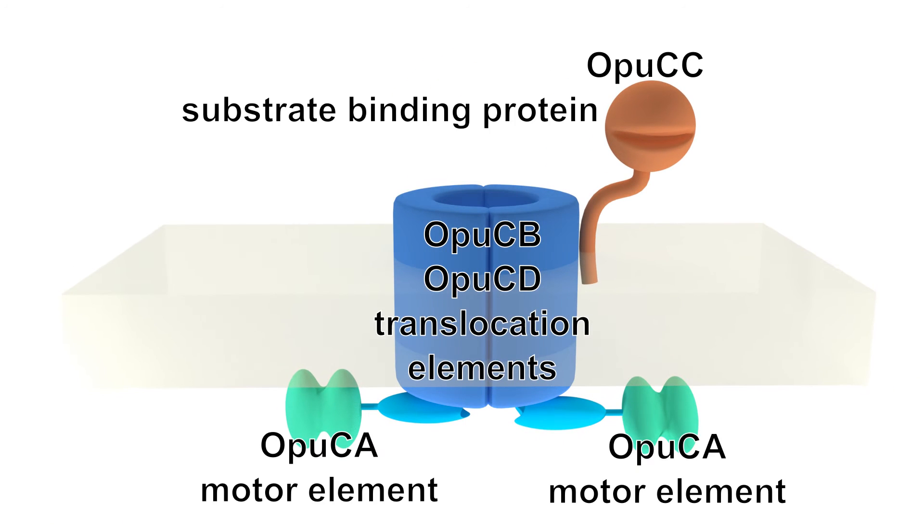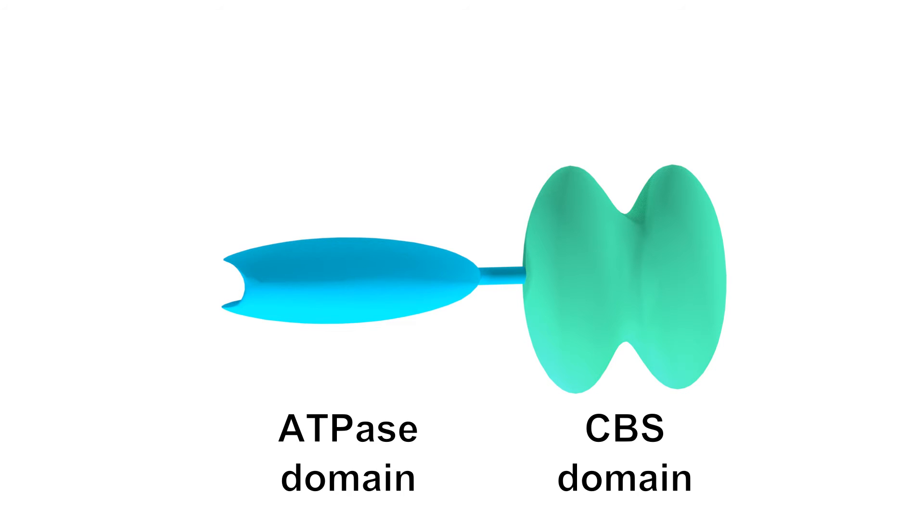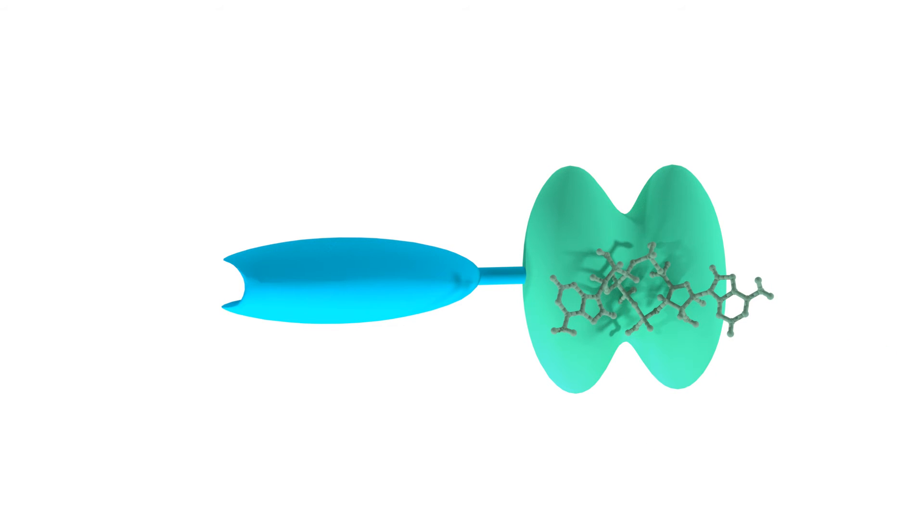This transporter is supposedly involved in the uptake of osmolites, and this can help Staphylococcus aureus to cope with osmotic stresses. Binding of cyclic di-AMP occurs via the CBS domain of OPUCA, and this binding is specific for the nucleotide cyclic di-AMP.